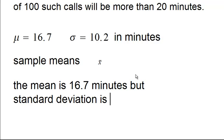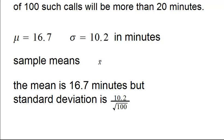The standard deviation of x-bar will be the population standard deviation divided by the square root of the sample size. The sample size here is 100, so the square root is 10, giving us 1.02 minutes. And since n=100 is a large sample size, we can apply the central limit theorem.